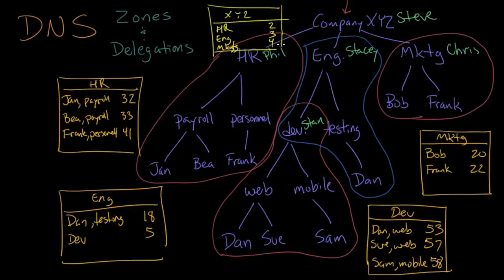Let's say a call comes in for Dan in testing in the engineering division. Steve receives the call and says, 'I don't know Dan's number, but I'll hand you off to extension three.' The call comes in to Stacy, who looks in her list and says, 'I know where Dan is — Dan is in testing at extension 18.' That connects the call directly to Dan.